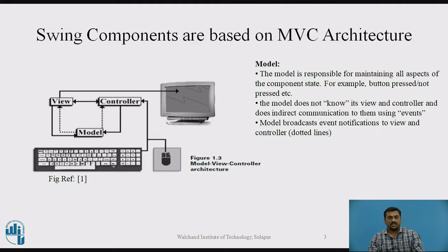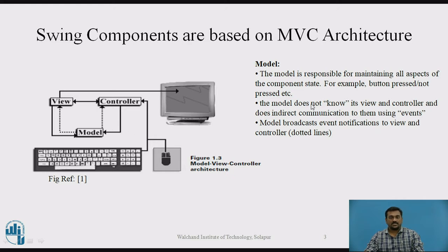Let us see how they interact. The first component is a model. The model is responsible for maintaining all aspects of the component state — for example, whether the button is pressed or not. All this information will be stored inside a model. The model does not know its view and controller.